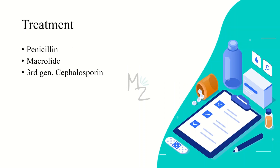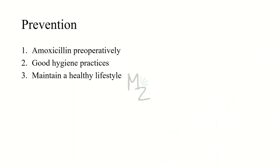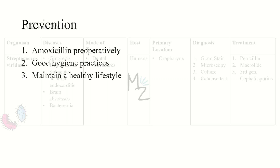Treatment: Infections caused by Streptococcus viridans are treated with beta-lactams such as penicillin, macrolides such as erythromycin, and third-generation cephalosporins. Prevention: Infections are prevented by giving amoxicillin preoperatively, and by maintaining good hygiene and a healthy lifestyle.